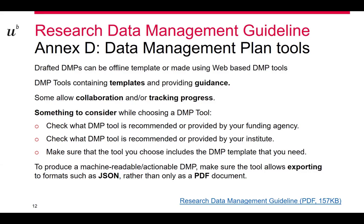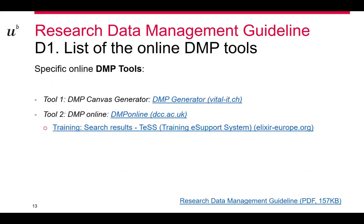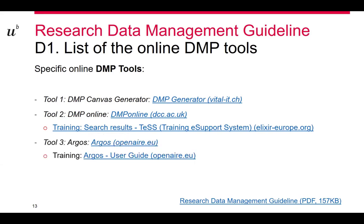Starting from Annex D gives you a starting point for dealing with the data management plan. The annex also includes a list of specific DMP tools with direct links, and in some cases — such as DMP Online from the Digital Curation Center (DCC) — a link to official training for the tool. Next week there is a DMP Online community event where ideas on how to evolve the tool will be presented. Another typical tool is Argos, for which a guide is also provided.